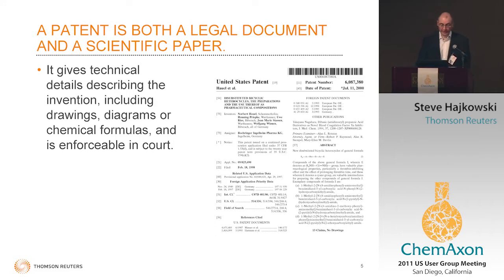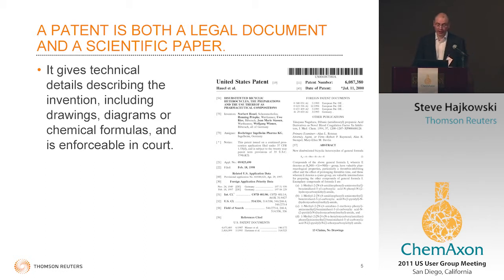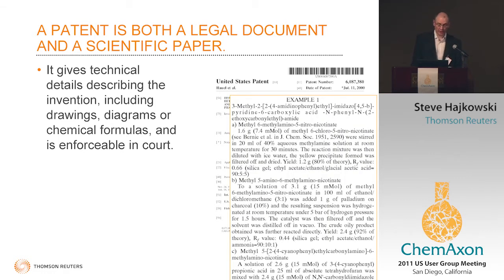Moving on to look in more detail at what's actually in the patent itself — a patent is both a legal document, protecting the invention from a legal perspective, and also really a scientific paper. Because of all the detail in there, we consider it an important scientific disclosure as well. The front page of a United States patent includes details of who the patent assignees are, who the inventors are, brief details of the invention itself, and publication dates. If it's a patent in the chemistry area, you'll often see a series of examples showing the synthesis and preparation of some of the claimed compounds — full synthesis details — as well as the actual legal part.